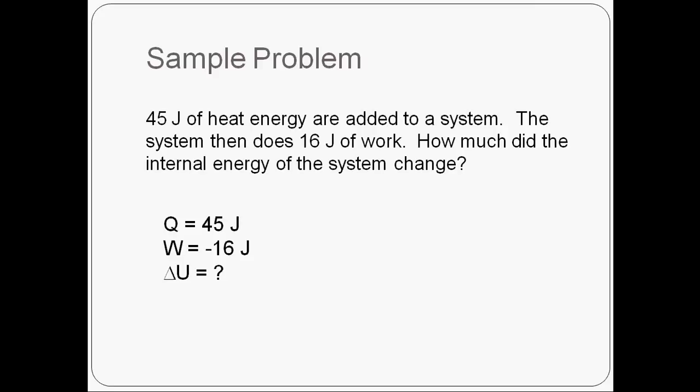Now for our total work done, we didn't do any work on our system, but the system lost energy in the form of doing 16 joules of work. So that means that overall, for our total work done, we lost 16 joules of energy. So that's going to be a negative. Finally, we want to know how much the internal energy of the system changed. So we're solving for delta U. Now the first law of thermodynamics tells us that the change in internal energy of a system is equal to the total heat transferred plus the total work done. I know the heat transferred and the work done, so I can just plug those in. My change in energy is equal to 45 joules minus 16 joules that got lost. Which means that overall, my internal energy contained in my system increased by 29 joules.